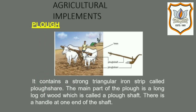First comes the plow. The plow is a large agricultural implement used for plowing or tilling the soil in the field. The traditionally used wooden plow consists of a long log of wood called the plow shaft. There is a handle at one end of the plow shaft, and below the handle is a strong triangular iron strip. The other end of the plow shaft is attached to a wooden beam, which is placed over the neck of two bullocks or oxen to pull the plow.